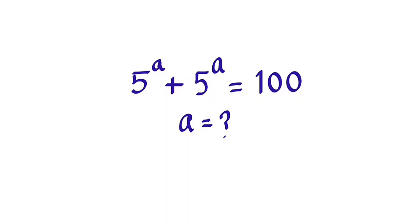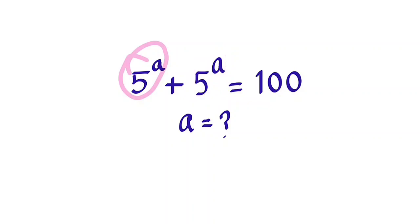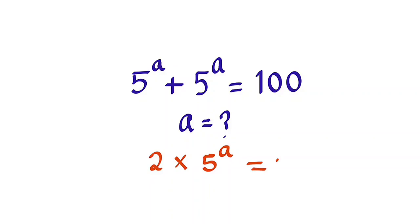So I'm going to have 5 to the power of a, plus 5 to the power of a. We can see that they are the same thing, so we can add them together. That gives us 2 times 5 to the power of a, and this equals 100.